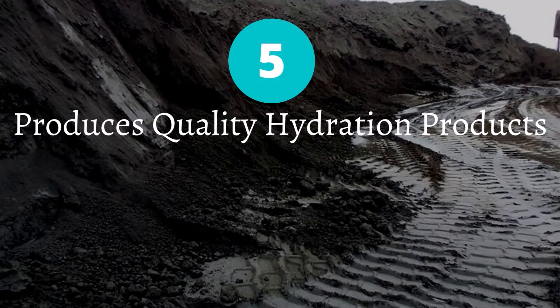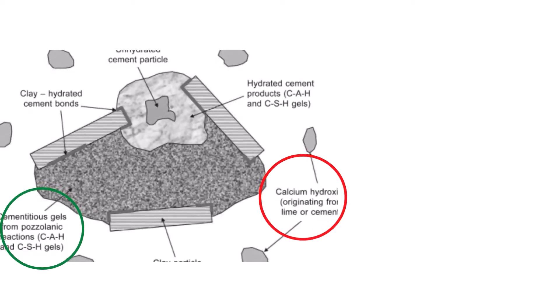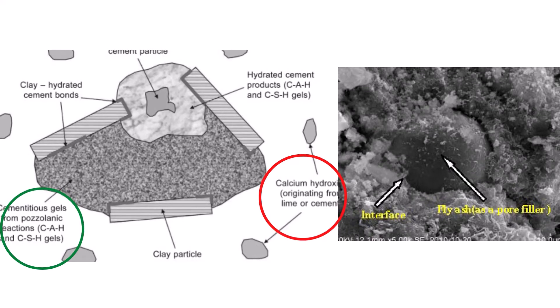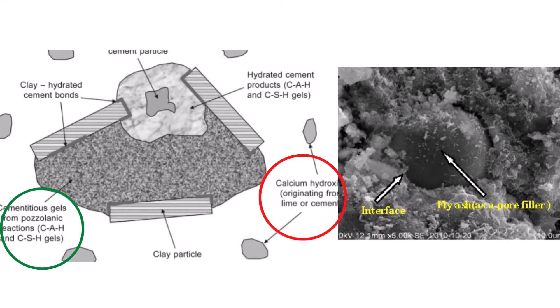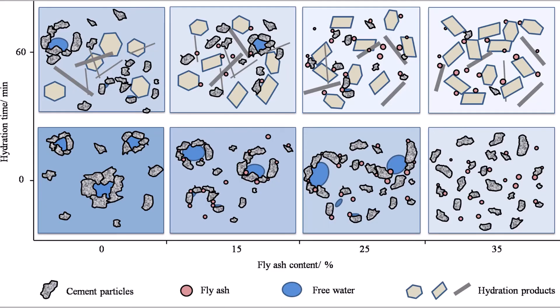Benefit 5: Fly ash produces quality hydration products. Fly ash is a pozzolanic material which undergoes pozzolanic reaction when used in concrete manufacture. The fly ash undergoes pozzolanic reaction with byproduct calcium hydroxide, which is in turn a byproduct of the reaction of cement and water, and again develops more hydration products by consuming the calcium hydroxide. Calcium hydroxide (CH) is a demerit to concrete strength. This demerit material is consumed by the presence of fly ash, which creates more hydration products, increasing the quality of hydration products and hence a more quality concrete is obtained.